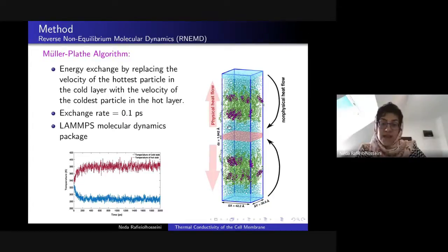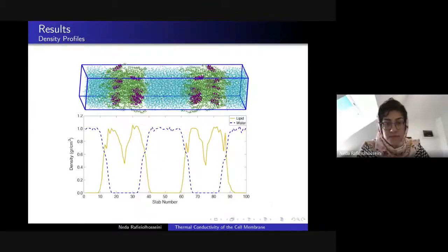After a while we reach to a steady state in which a physical heat flow will be created and formed through the membrane, and the rate of physical and non-physical heat flows become somehow equal. You can see in the bottom plot that after a while after starting our NEMD algorithm we reach to this steady state. The exchange rate that we use here is 0.1 picosecond and we use LAMMPS molecular dynamics package to do our simulations.